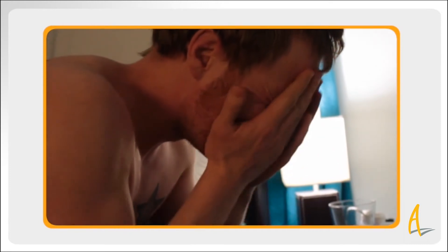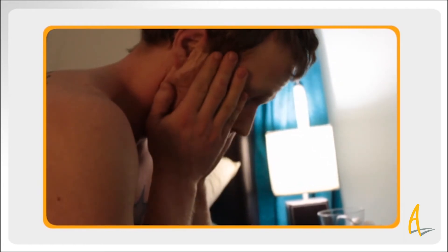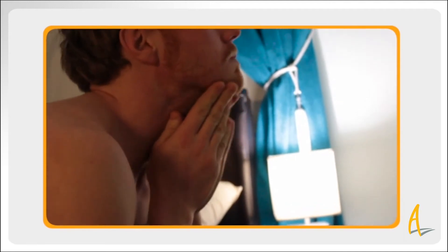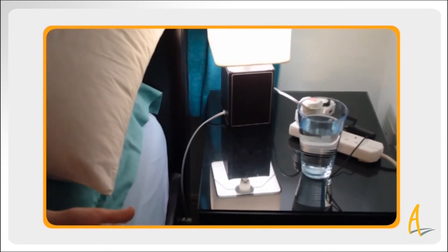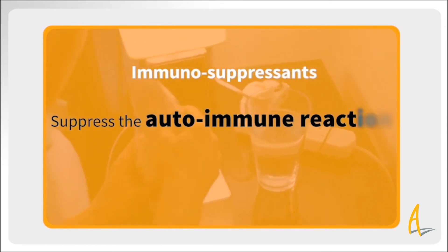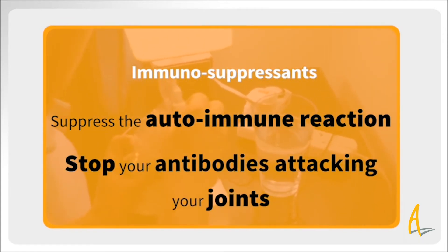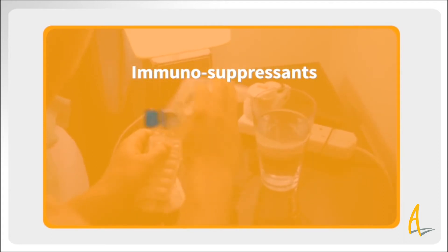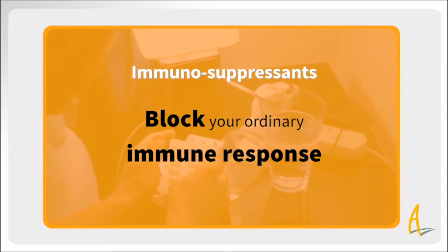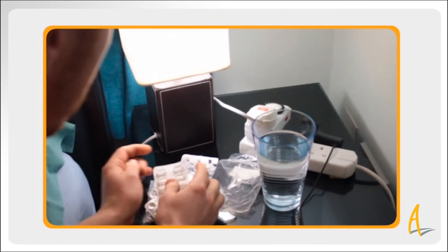This inflammation is what causes the damage. It can come and go, causing flare-ups which can persist for a long time. During a flare-up, the autoimmune reaction can affect other parts of the body also, and you may feel generally unwell. Part of the treatment for autoimmune disease can be to take medication which suppresses or blocks your immune system. These are called immunosuppressants. They suppress the autoimmune reaction, which is good because they stop your antibodies attacking your joints. However, they also block your ordinary immune response, and you can therefore pick up infections more easily. This is discussed again in Module 3.